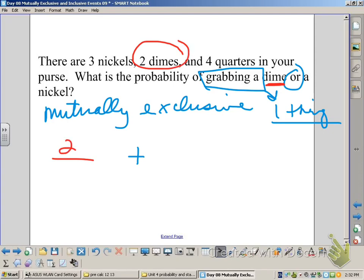Since there are two dimes, our first probability is two out of the total coins. And we have nine total coins. What's the probability of grabbing a nickel? Well, since there are three nickels, we have three out of nine. And so the answer is five out of nine.